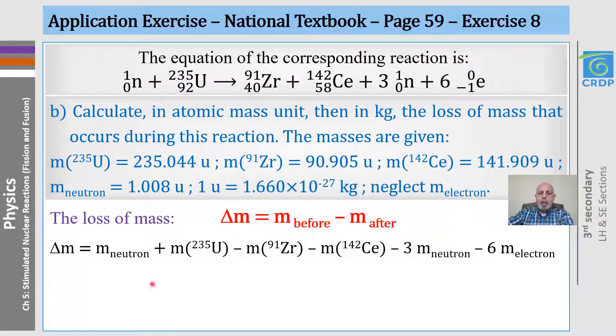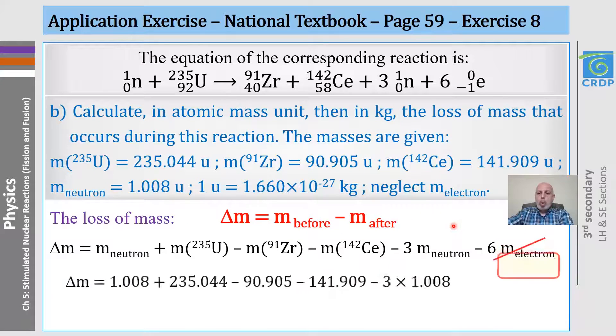We have all the masses, but we have to pay attention to this: minus 3 mass neutron, because we have 3 neutrons here, and minus 6 times the mass of the electron, because we have 6 here. Now, we know that the mass of the electron in this exercise is neglected, so we will remove it.